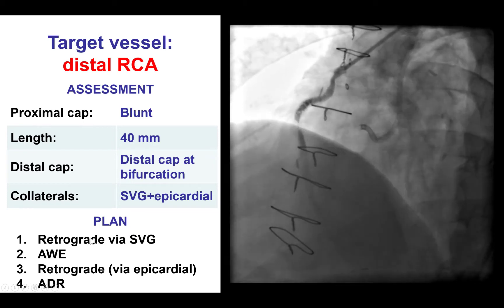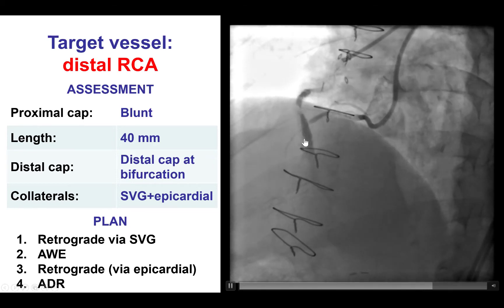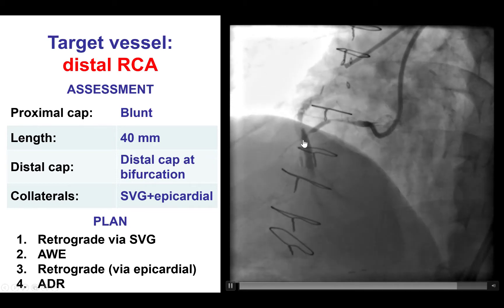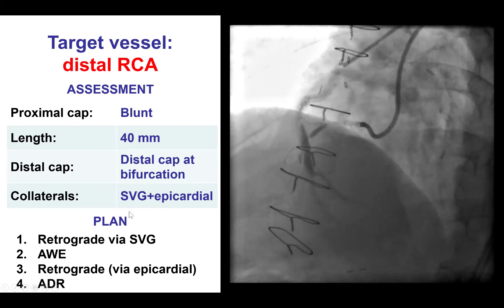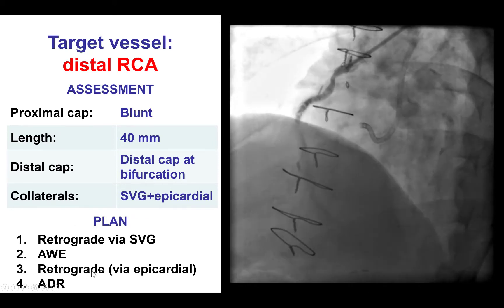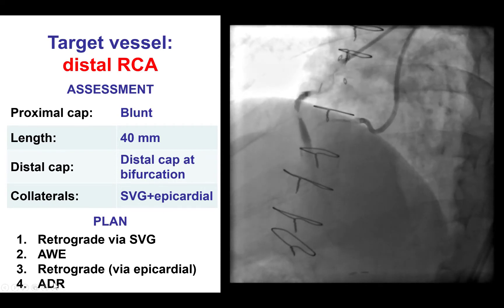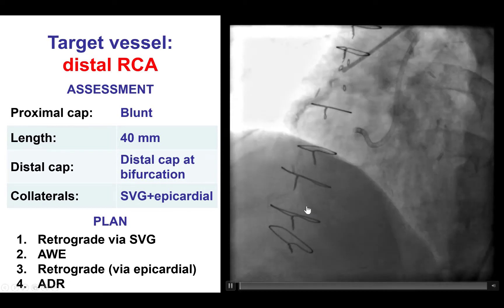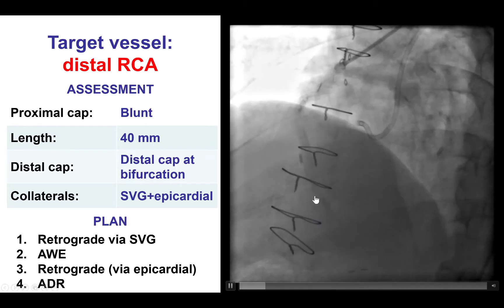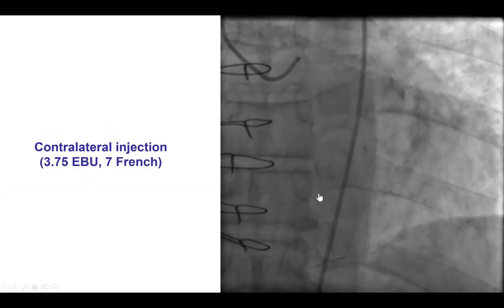Therefore, our plan was: as a first step, to attempt retrograde through the saphenous vein graft; second, try antegrade wire escalation; third, try retrograde via the epicardial; and if everything fails, try antegrade dissection re-entry — with this being the last resort since there was a bifurcation at the distal cap.